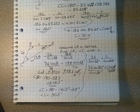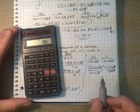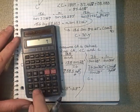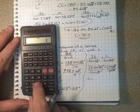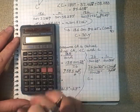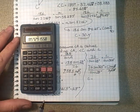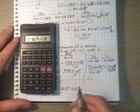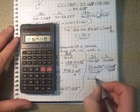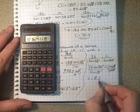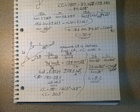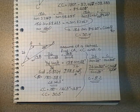So C is going to equal — let's work it out — 7.6 times sine 30.5, divided by sine 28. So I get 8.2. And there's an example of an obtuse triangle using the law of sines to calculate the unknown values.